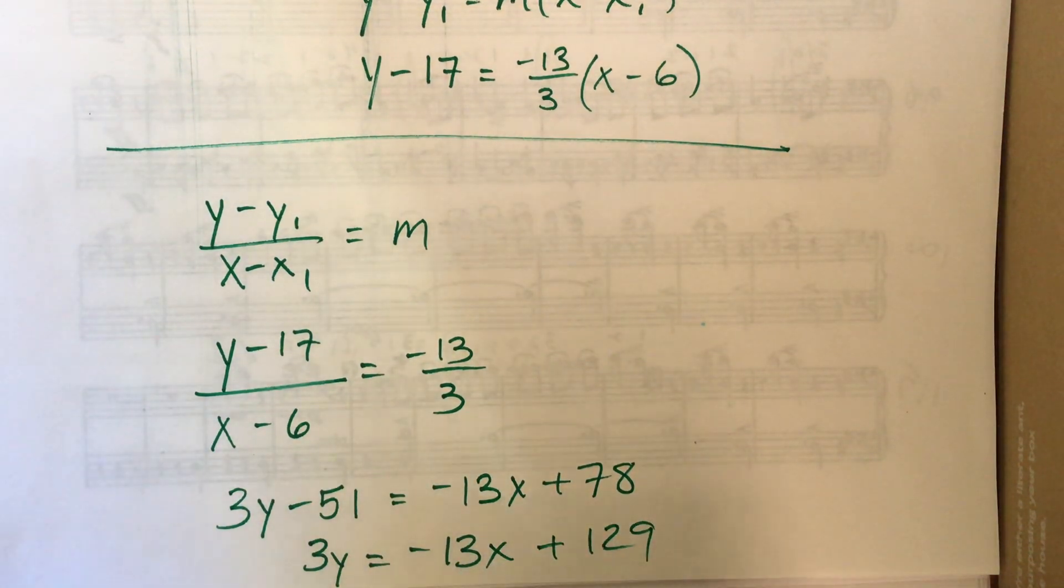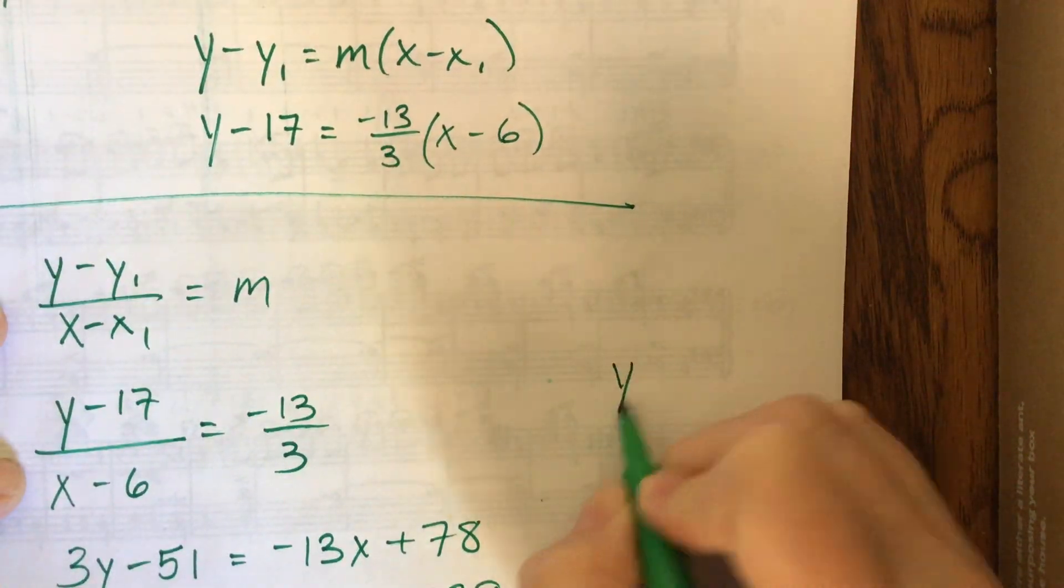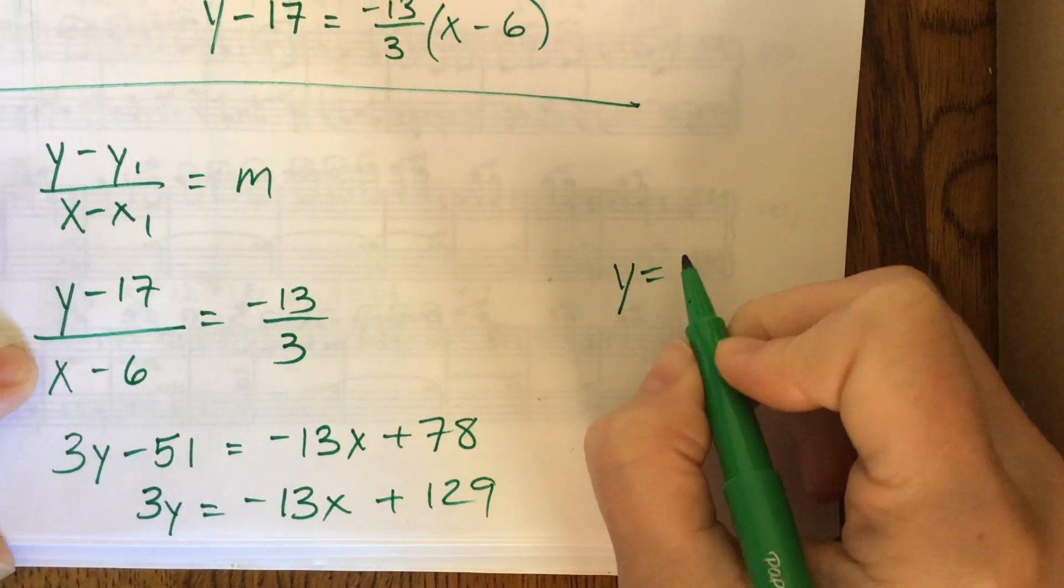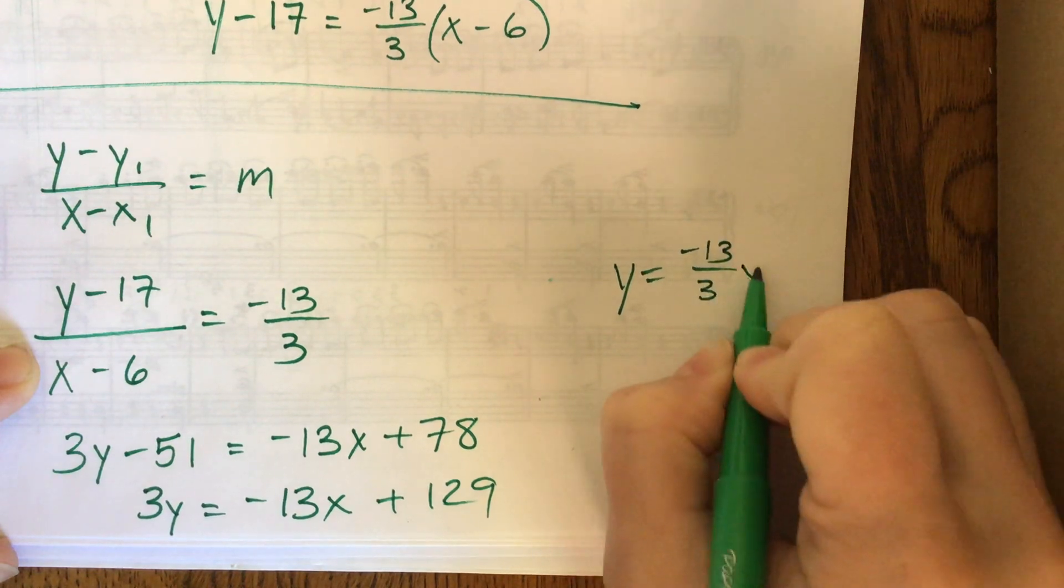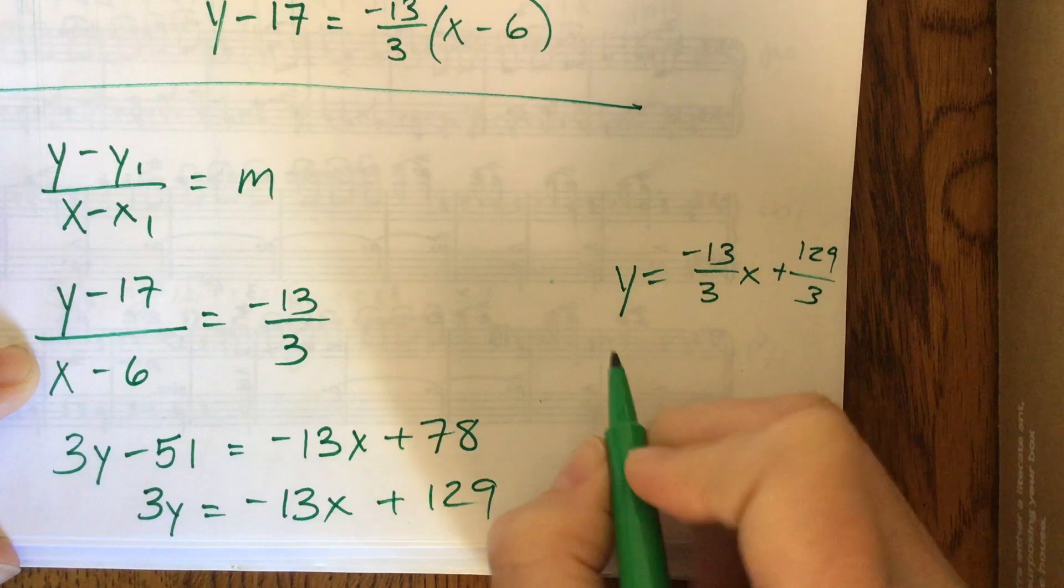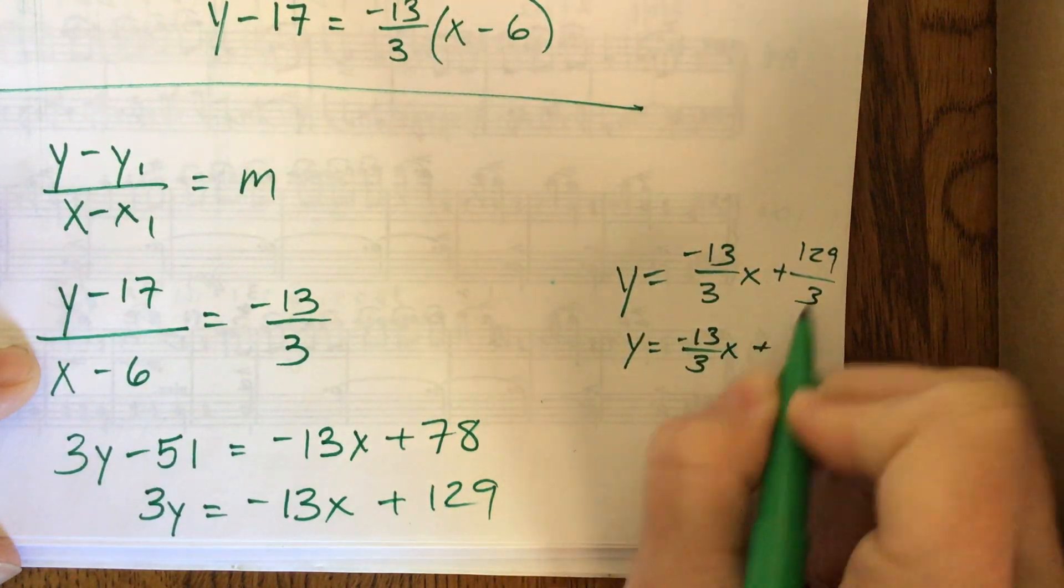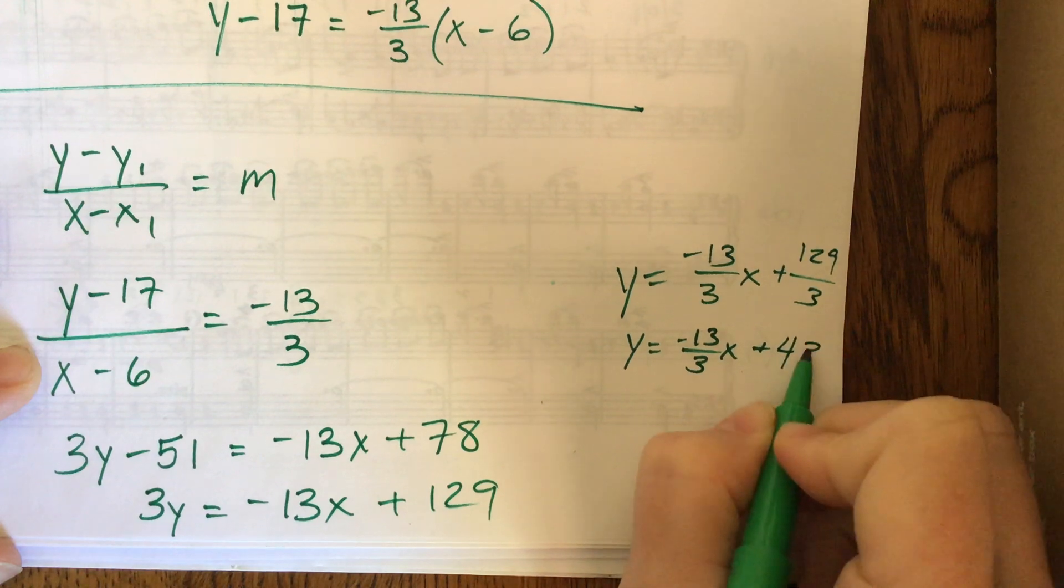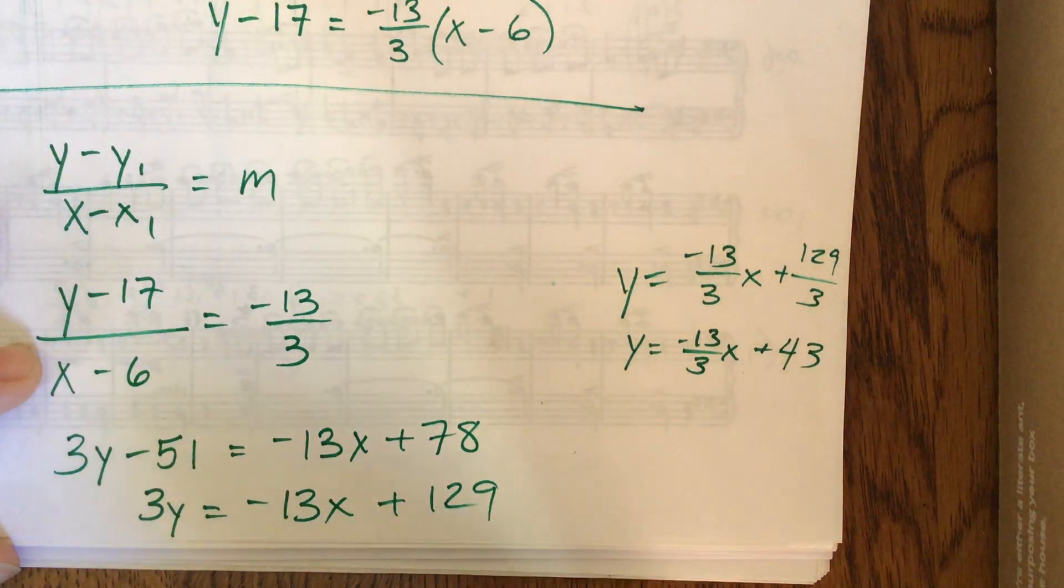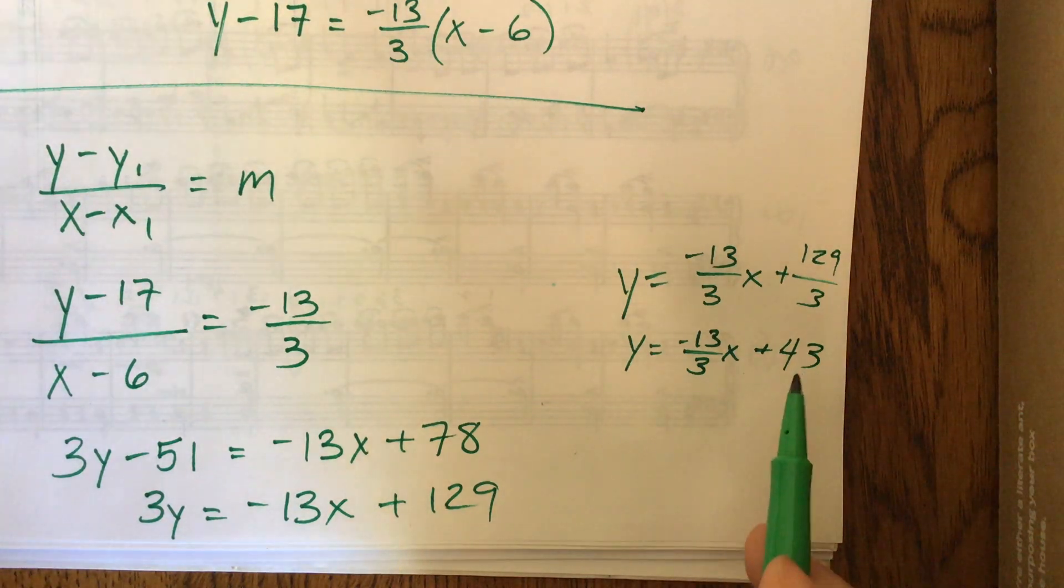Okay, and now I can divide by 3 or, and that puts me, y is equal to negative 13 thirds x plus 129 over 3. What is that, goes in 43 times? So there's your gradient intercept or intercept gradient form or whatever the book's going to call it.